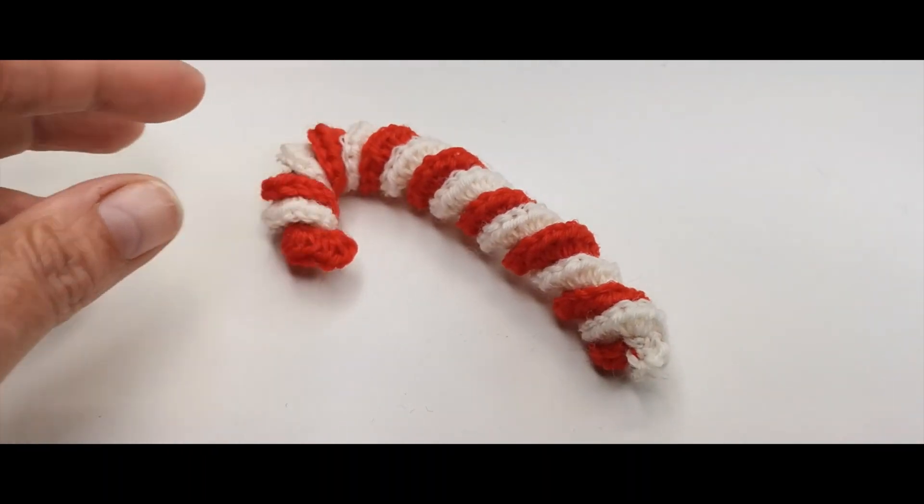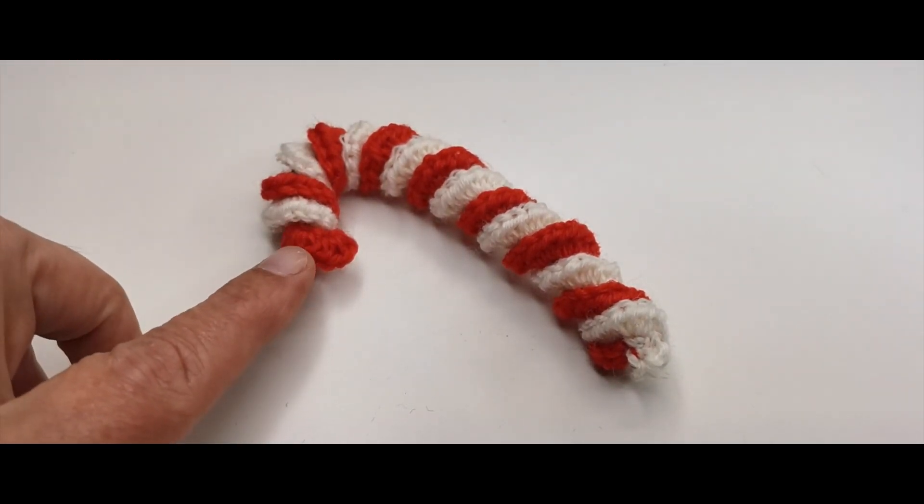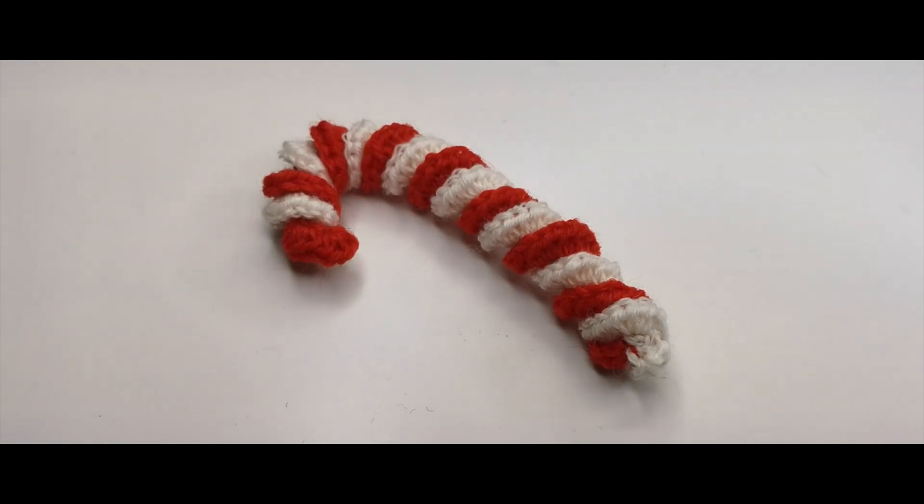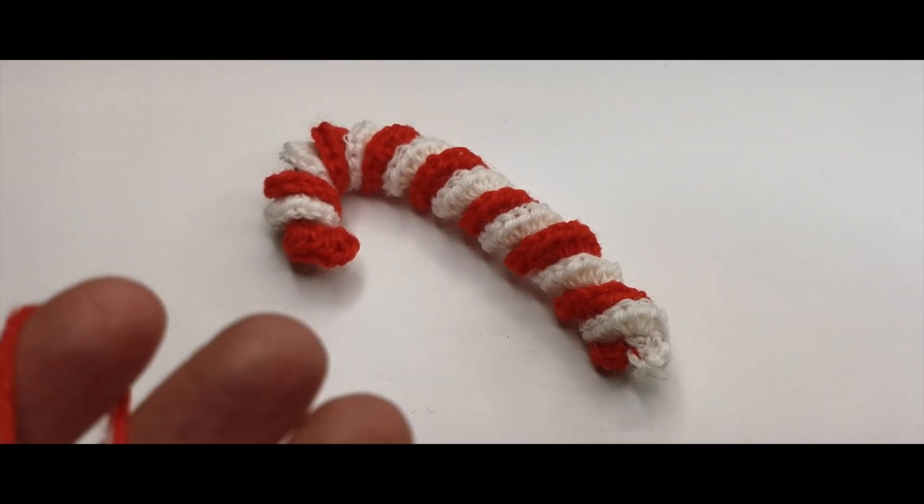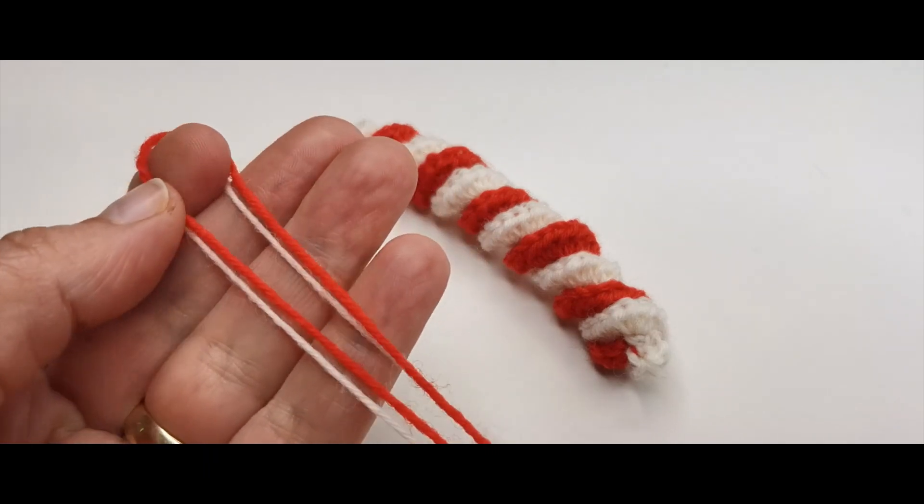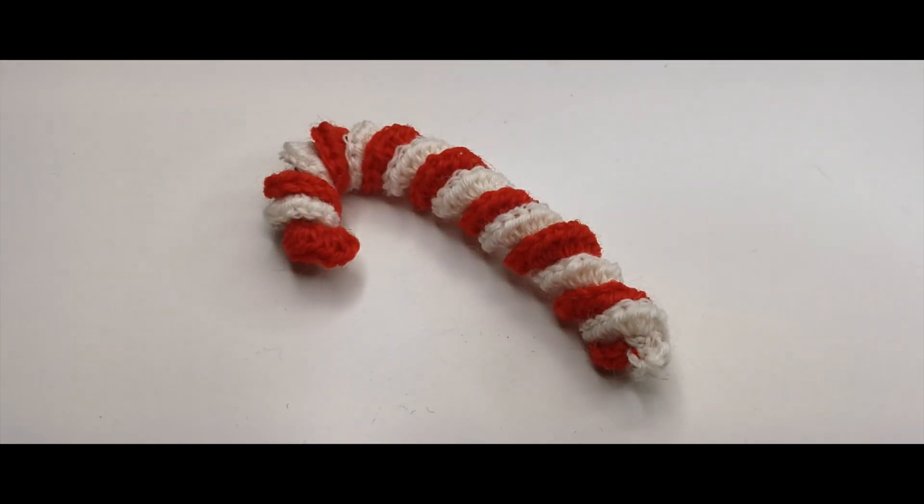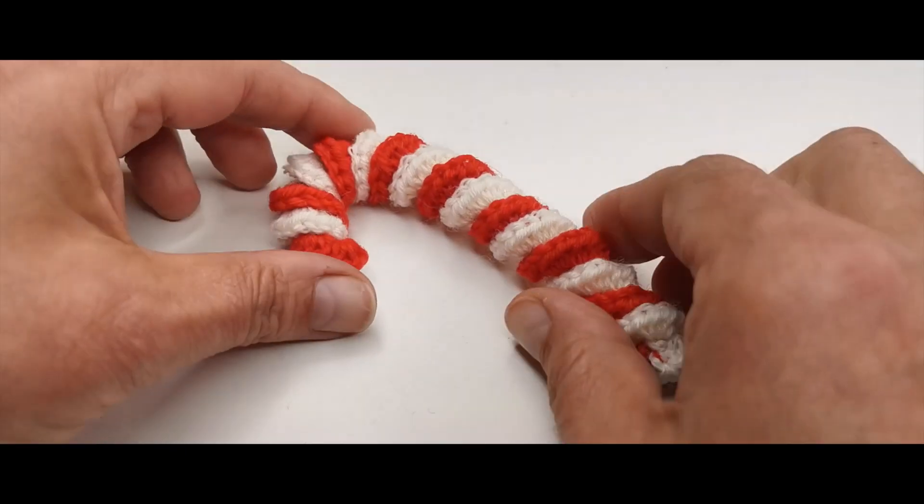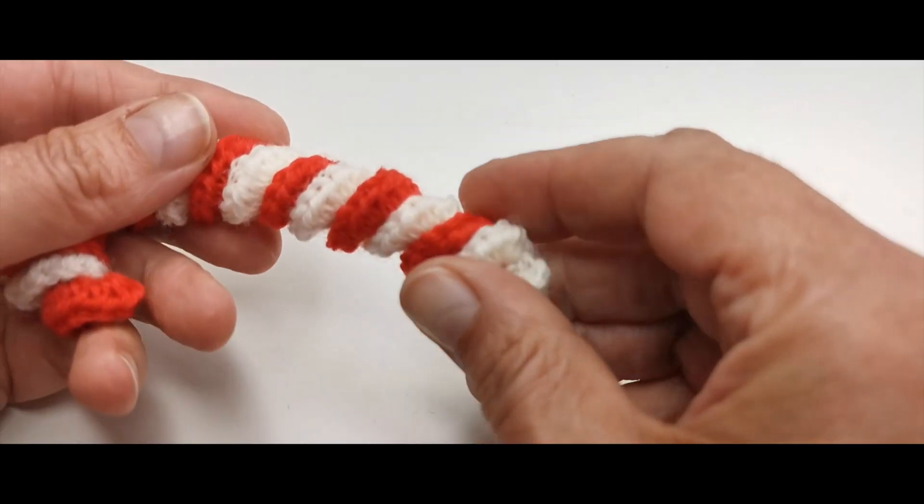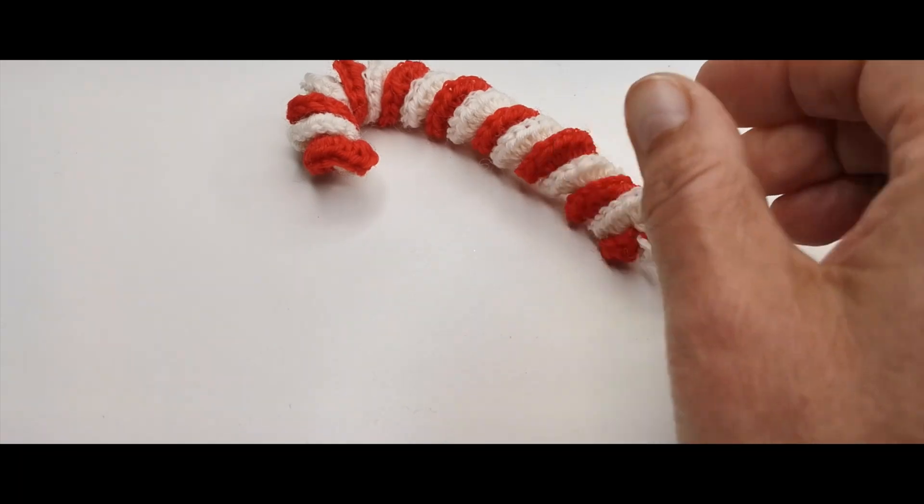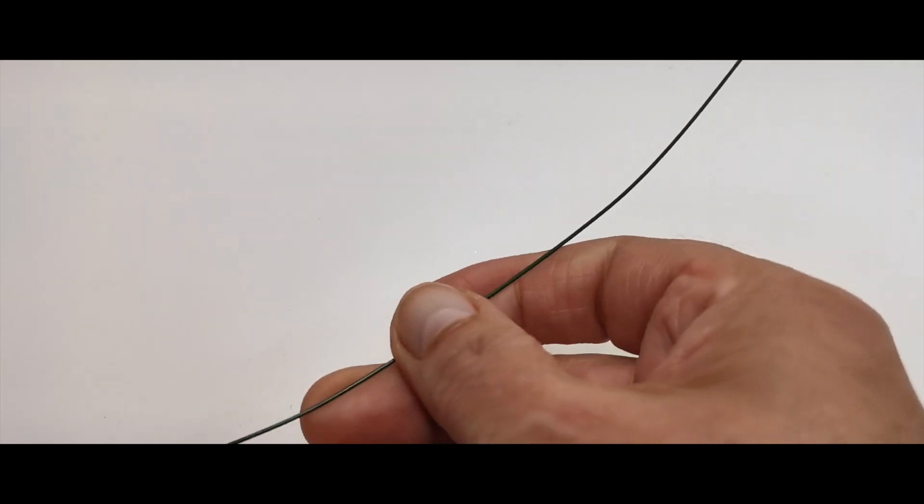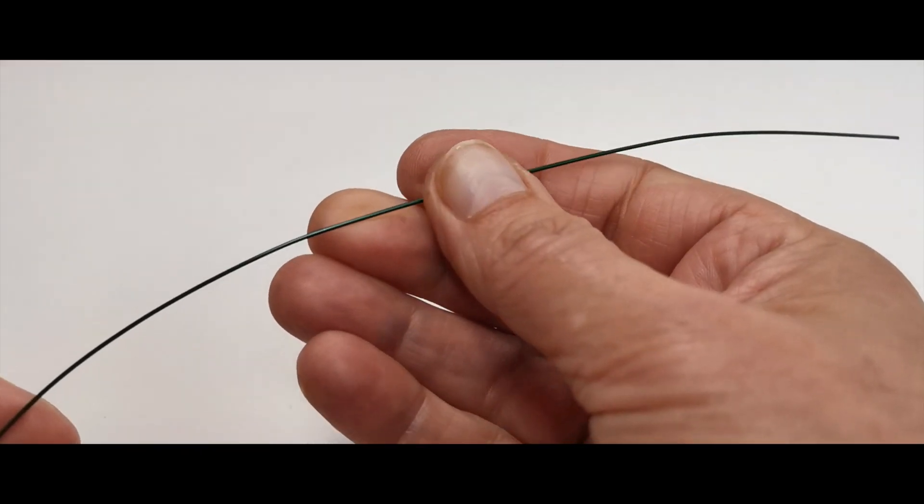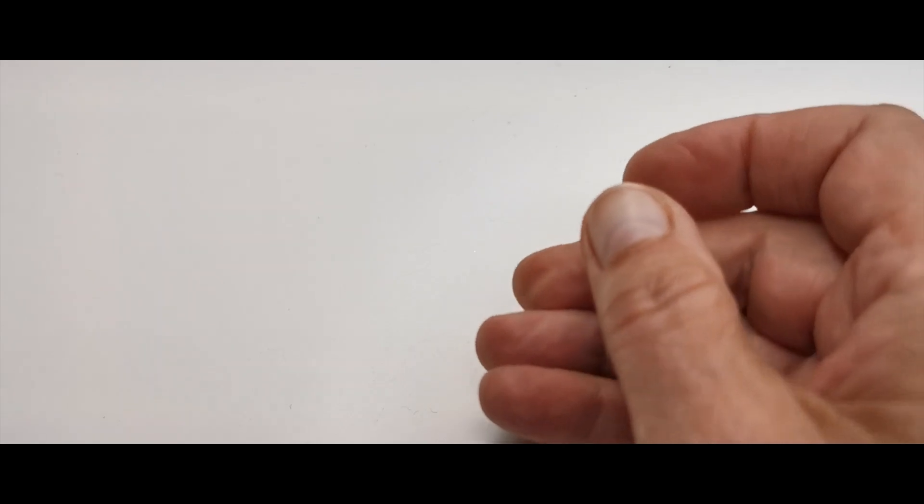Alles, was du brauchst, ist natürlich Garn in den Farben, in denen du häkeln magst. Weil ich damit gerne einen Türkranz weihnachtlich schmücken möchte, mache ich das in weihnachtlichen Farben. Und hier innen drin habe ich ein bisschen Draht befestigt. Du kannst auch Pfeifenreiniger nehmen, ganz herkömmlichen Blumendraht. Das zeige ich dir auch. Und natürlich eine Häkelnadel.